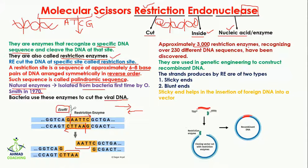This is how bacteria protect themselves from viral infection. To date, approximately 3,000 restriction enzymes have been identified or discovered, and these 3,000 enzymes recognize 230 different DNA sequences.